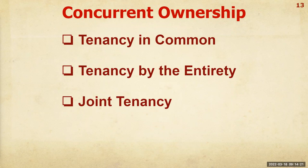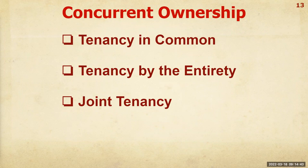There are three different kinds of concurrent ownership: tenancy in common, tenancy by the entirety, and joint tenancy. Notice that the word 'tenant' doesn't actually mean renter — a tenant is someone who holds an estate. These are the three different kinds of concurrent ownership possible in North Carolina.